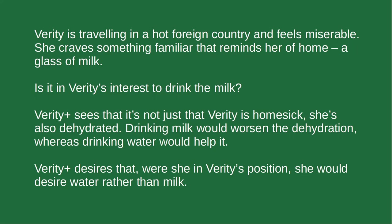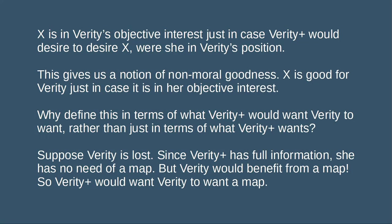Verity Plus also sees how much Verity dislikes drinking plain water, the consequences of continued dehydration, how much pleasure and pain would occur to Verity depending on what she does, and so on. Given all the information available to her, Verity Plus comes to desire that if she were in Verity's position, she would want to drink water rather than milk. So we have a notion of what is good for Verity — what is in Verity's objective interest. X is non-morally good for Verity just in case X is in her objective interest, and X is in Verity's objective interest just in case Verity Plus would desire to desire X, were Verity Plus in Verity's position.